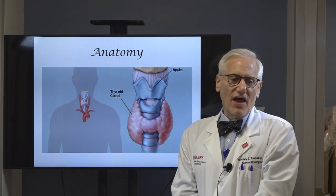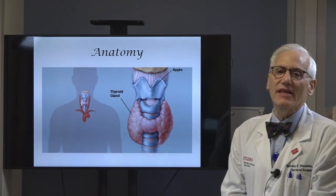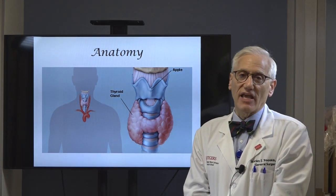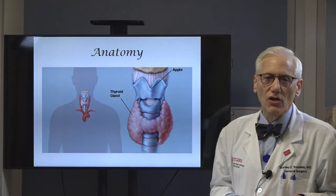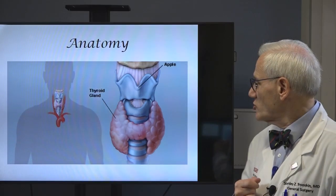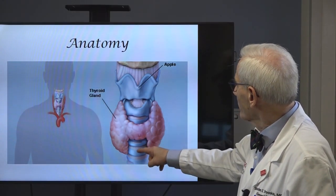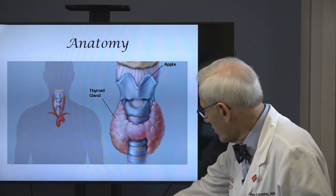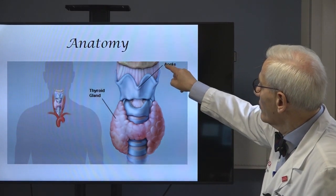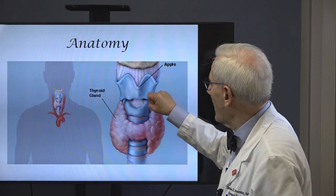Anatomy. The thyroid gland is located very superficially in the neck, right under the skin. We define a big thyroid as one that you could see or feel. Using this anatomic landmark, the Adam's apple, the thyroid gland is below it, and it wraps around the windpipe or trachea as shown in this illustration. So there's the Adam's apple, this is the windpipe or trachea, the lungs are down here. You take a deep breath and the vocal cords, which are right behind the Adam's apple, will open up.